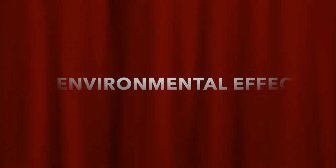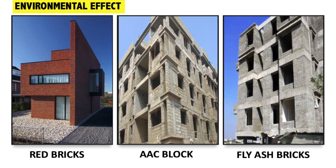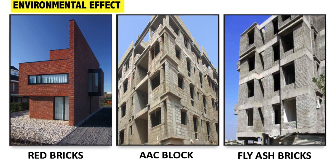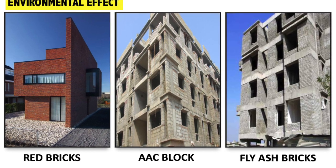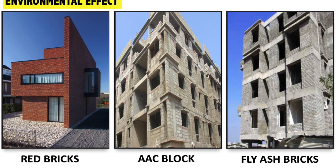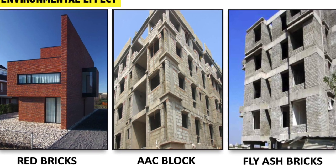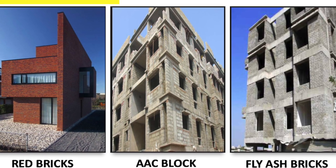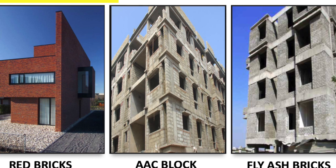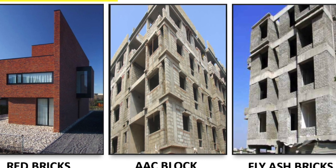Point 1: Environmental Effect. Red bricks are not a green product because they are made by a mixture of clay, sand, lime, iron oxide and magnesia. If clay is continuously used for making red bricks, in future it reduces the top fertile soil cover. Hence, the land available for agriculture gets reduced. Red bricks emit more amount of carbon dioxide during the manufacturing process.